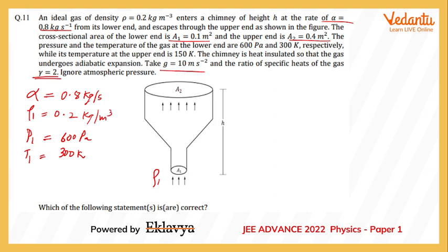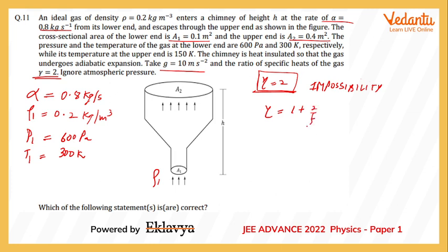g and gamma are also given. Gamma is given as 2, which is an impossibility for an ideal gas. The expression for gamma is 1 + 2/f, and the minimum value of f is 3, meaning gamma cannot exceed 5/3. However, I'm going to ignore this and solve the question assuming gamma equals 2, since this value was likely chosen to keep calculations simple.